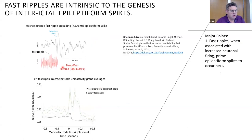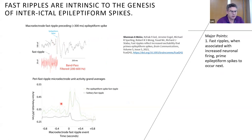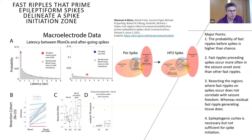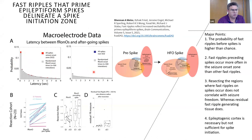In addition to triggering seizures, fast ripples may prime or trigger the onset of epileptiform discharges. When fast ripples occurred within 300 milliseconds preceding an interictal epileptiform spike, the associated neuronal firing was much more vigorous than when fast ripples occurred alone. This suggests that fast ripples prime the epileptiform spike to occur next. The probability of a fast ripple preceding a spike within 300 milliseconds was significantly greater than chance in the seizure onset zone, but not in the non-seizure onset zone.